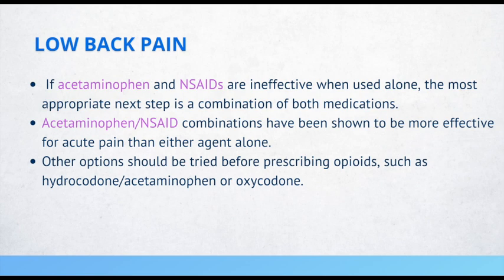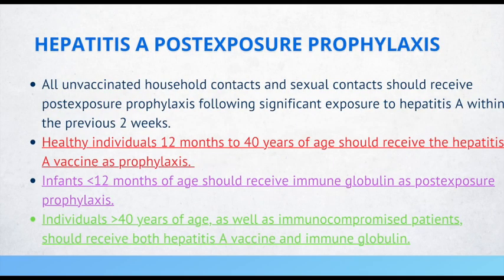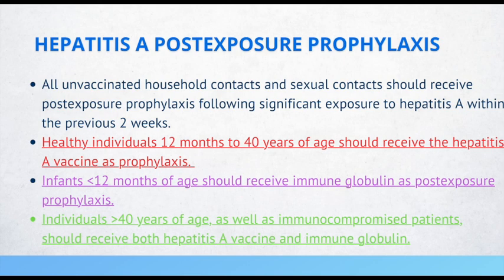Hepatitis A post-exposure prophylaxis: all unvaccinated household and sexual contacts should receive post-exposure prophylaxis following significant exposure to hepatitis A within the previous two weeks. Healthy individuals 12 months to 40 years of age should receive the hepatitis A vaccine. Infants less than 12 months of age should receive immune globulin. Individuals older than 40 years of age as well as immunocompromised patients should receive both the hepatitis A vaccine and immune globulin.